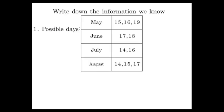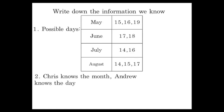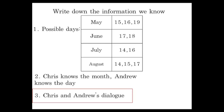We need to write down all the information we know. So we have the possible days, which we can put in this nice table, and we know that Chris knows the month and Andrew knows the day. Then we have Chris and Andrew's dialogue, and that's what I really want to focus on, because there's a reason it's in the problem. It must give us some kind of information.